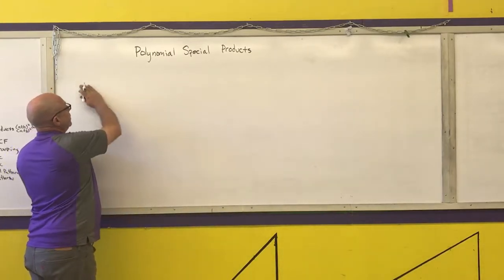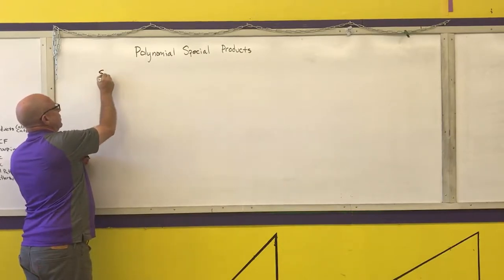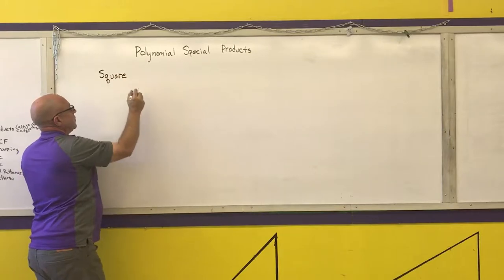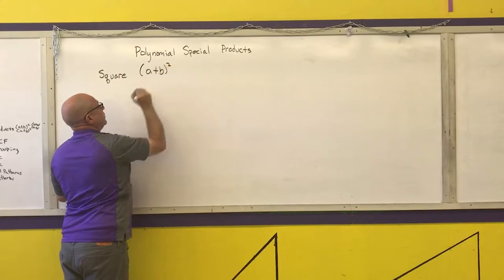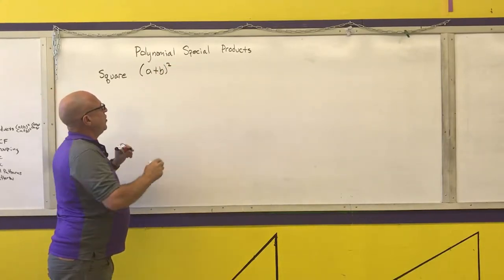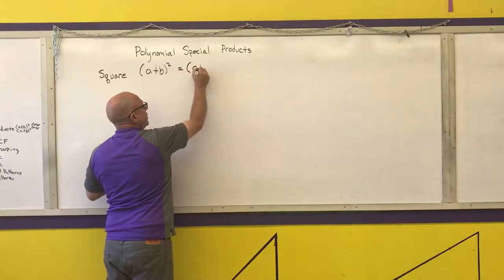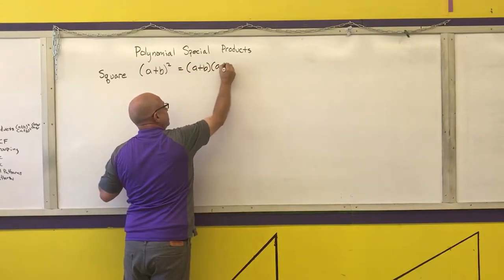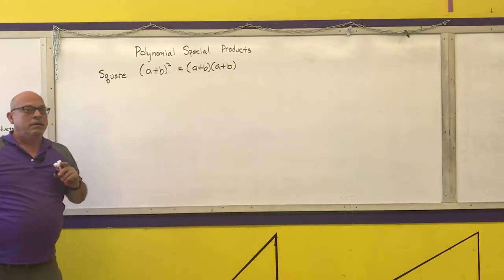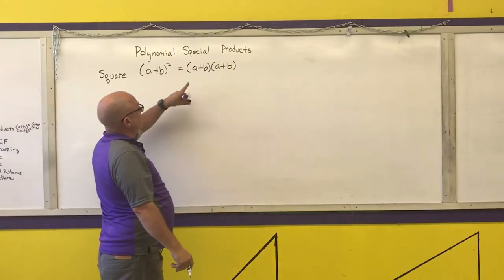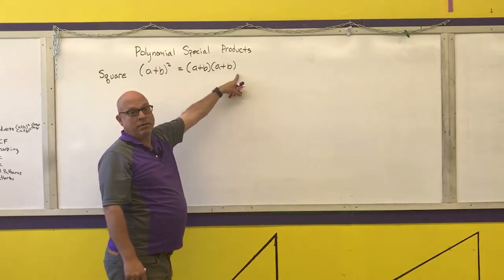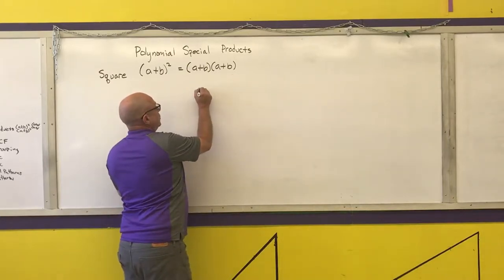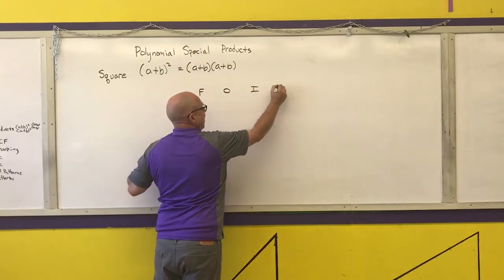The first one is the square of a binomial. For example, a plus b squared. Something squared is that something times itself. From the multiplication video, you know that I can do this work by the FOIL method — first, outer, inner, and last.